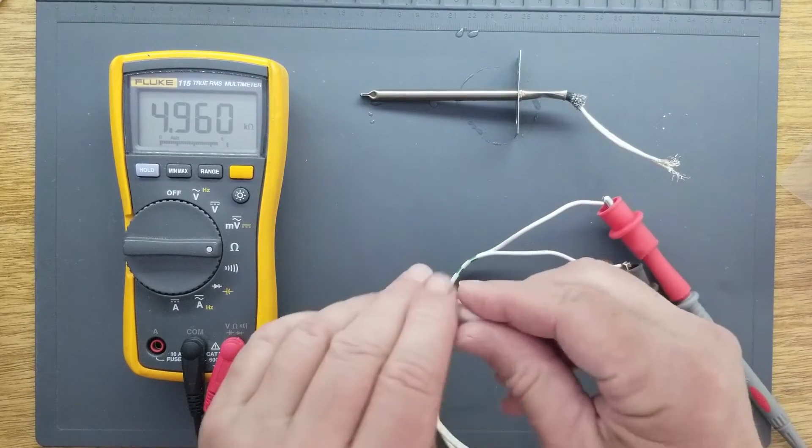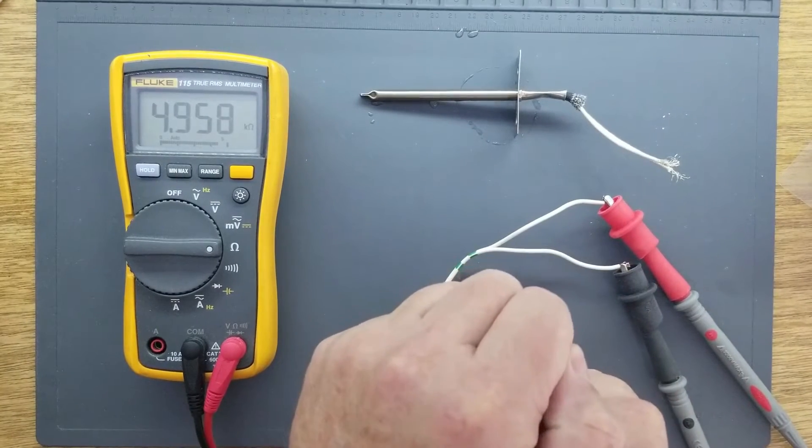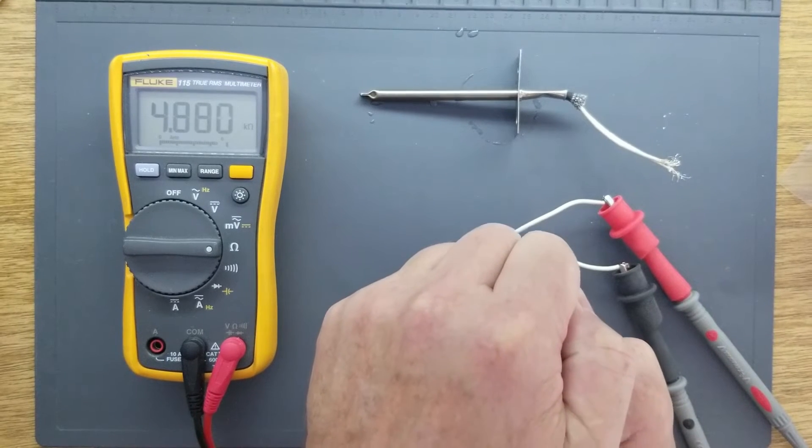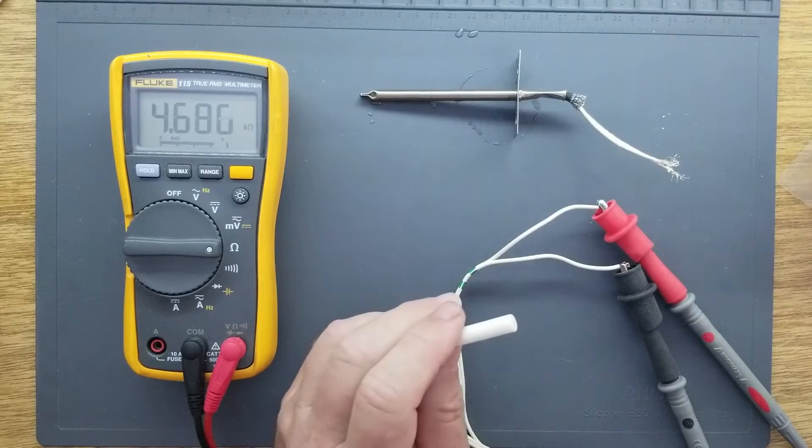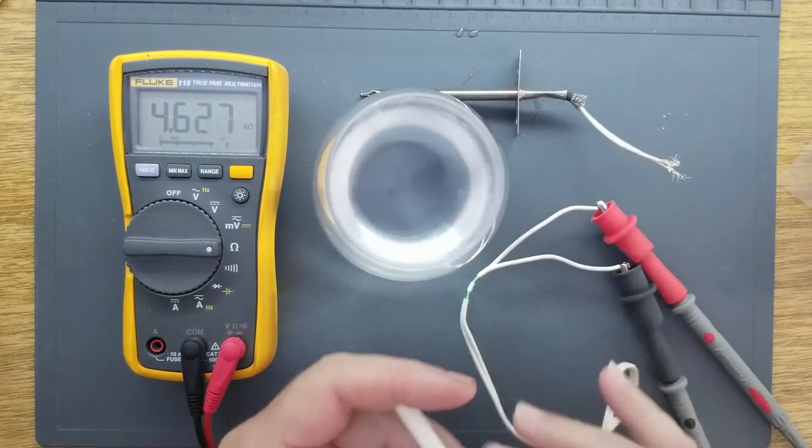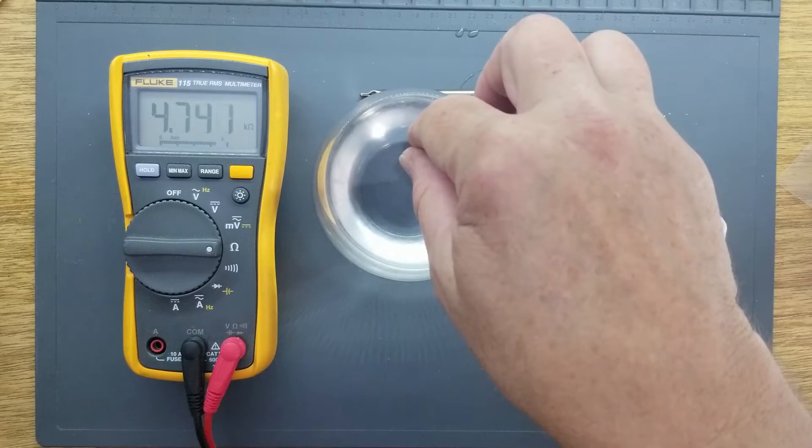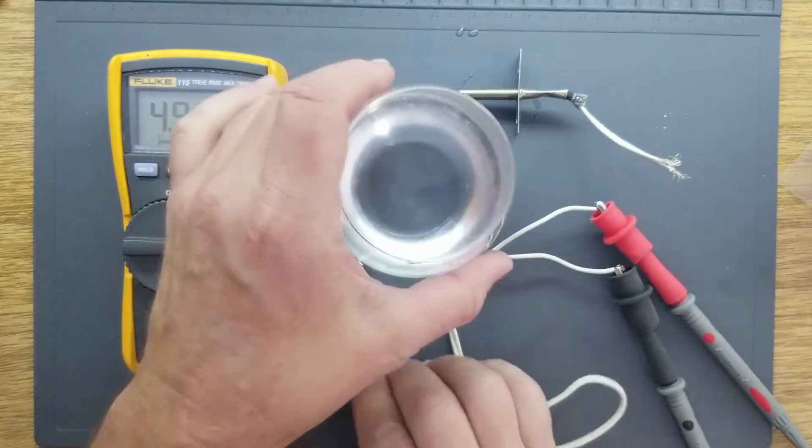As I heat it up with my hand, this NTC thermistor resistance decreases. If I put it in this ice water, the resistance increases. That's an NTC thermistor.